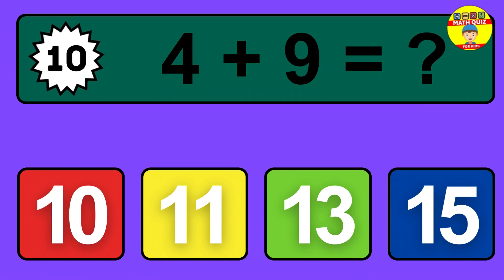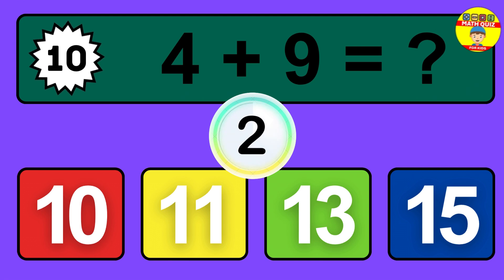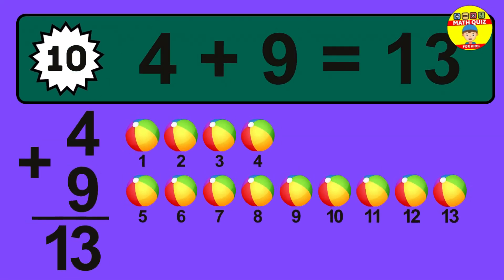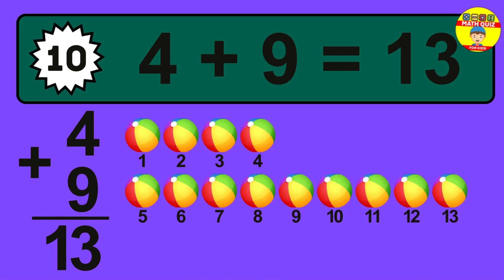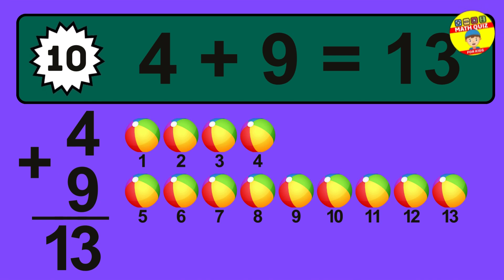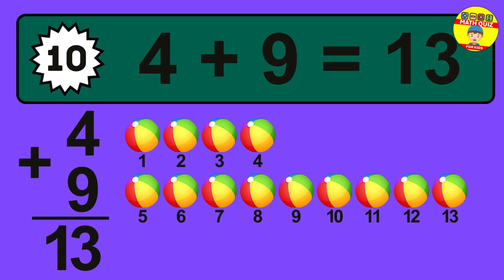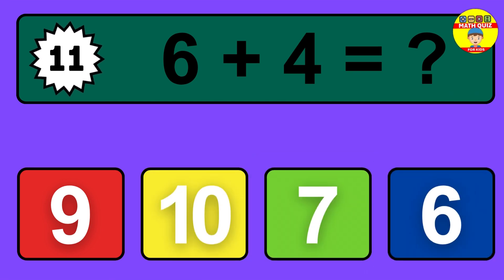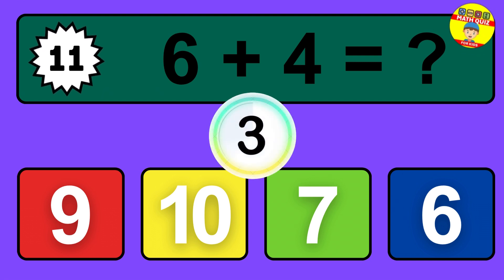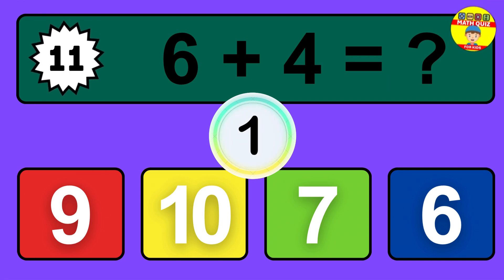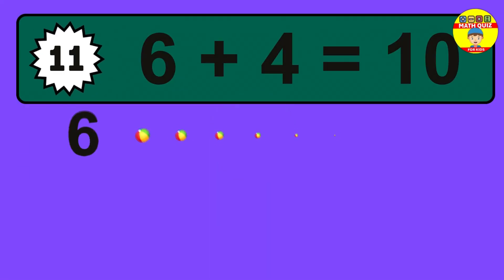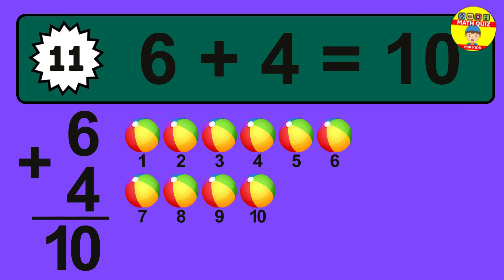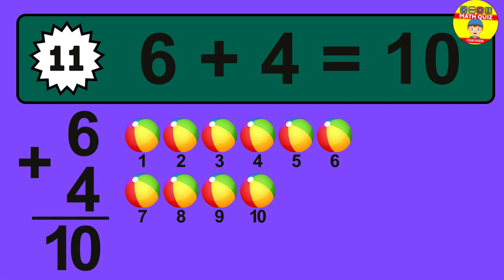Question 10. 4 plus 9 equals what? The answer is 4 plus 9 is 13. Let's count it: 1, 2, 3, 4, 5, 6, 7, 8, 9, 10, 11, 12, 13.